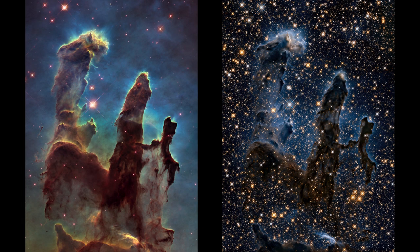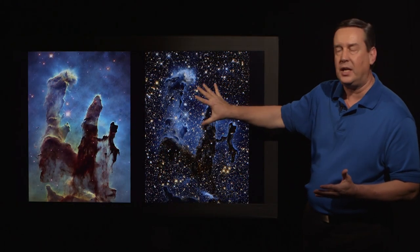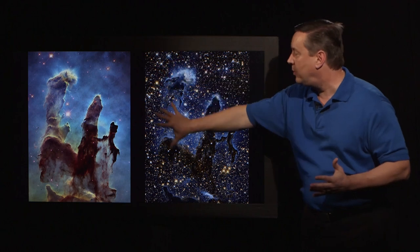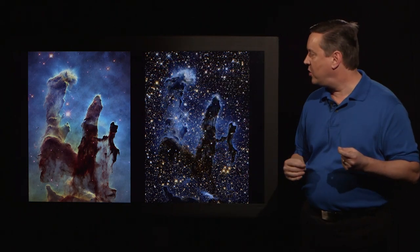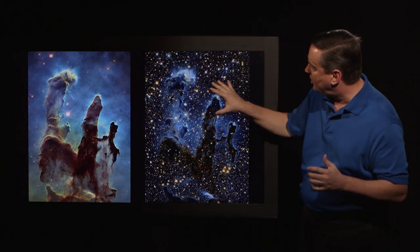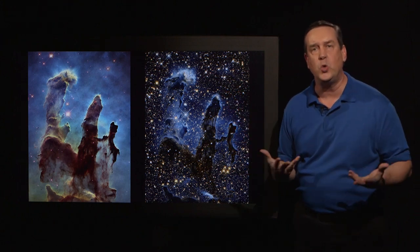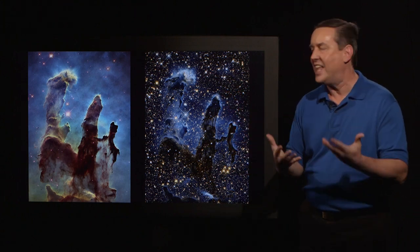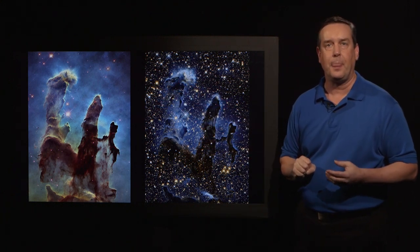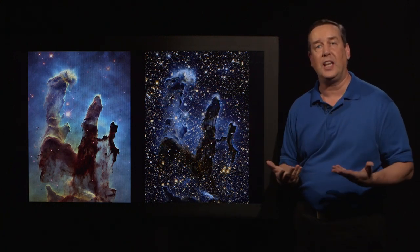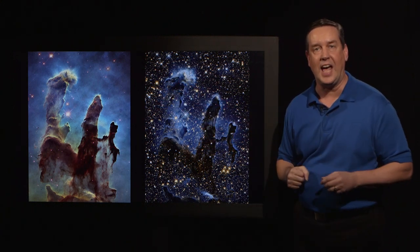That's because infrared light has longer wavelengths. The longer wavelengths can penetrate through the gas and the dust better, allowing you to see the stars both inside the nebula and the innumerable stars that are behind the nebula. You also notice that the pillars look kind of ghostly — they aren't really that solid in infrared light as they are in visible light, because the infrared light will penetrate through some of that gas and dust.